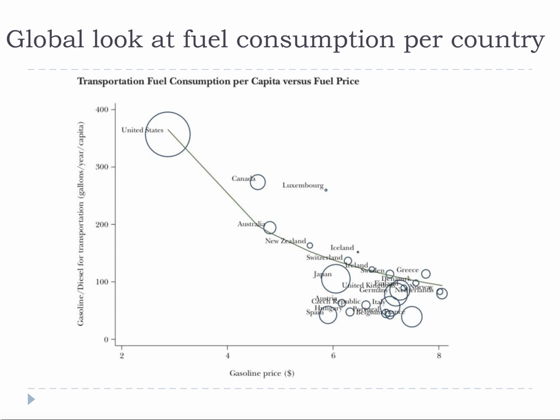In this graph, the size of the circle is proportional to population. The line is a fitted value from the regression of the log of consumption on the log of price. Notice how the U.S. pretty much stands alone in terms of how cheap our gas is and how much we use. This is an unusual relationship because usually when demand is high, price gets higher, and we definitely have the demand but not the price to match.